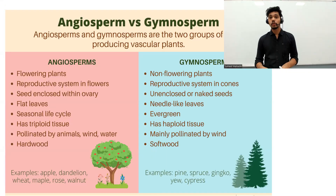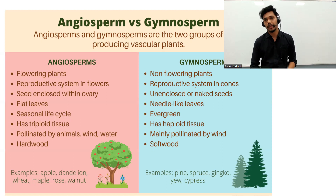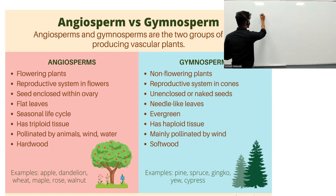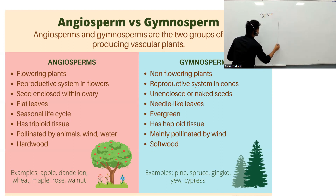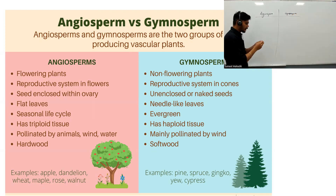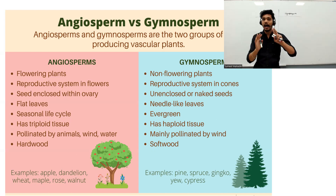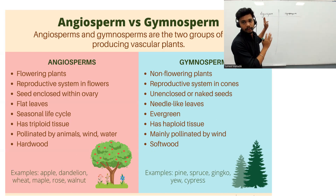Now we're going to talk about angiosperms and gymnosperms. These are the two groups of seed-producing plants. Both produce seeds and are vascular plants, meaning xylem and phloem are properly maintained in them.